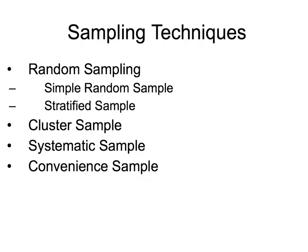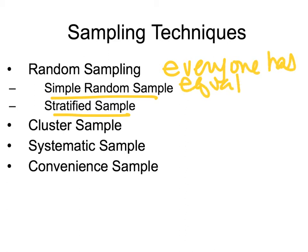There are several sampling techniques. Random sampling is when everyone has an equal chance of being selected. It's not as convenient as people think — it requires effort to ensure equal chance for everyone. It could mean assigning everyone a number and drawing from a hat, or selecting based on student IDs so every student has an equal chance of being picked.